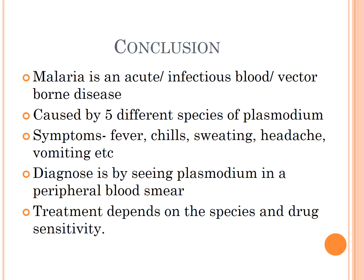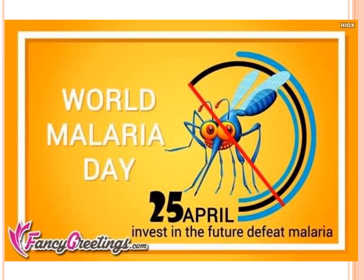In summary, malaria is an acute infectious disease caused by five different species of plasmodium, as discussed. Symptoms include fever, chills, and sweating. Treatment depends on the species and its drug sensitivity. World Malaria Day is observed on the 25th of April. Thank you.